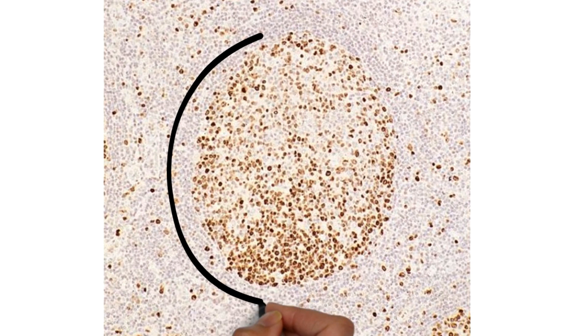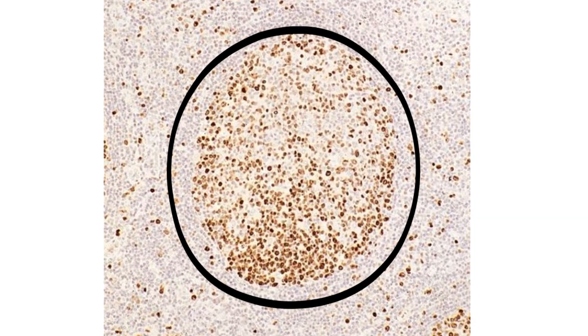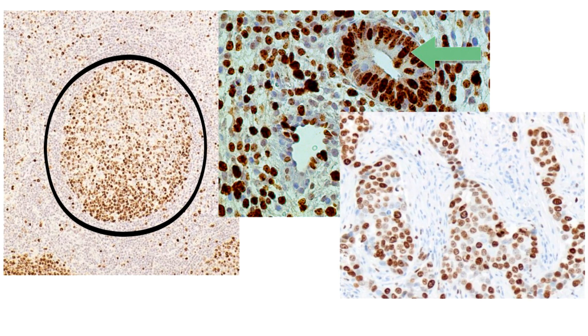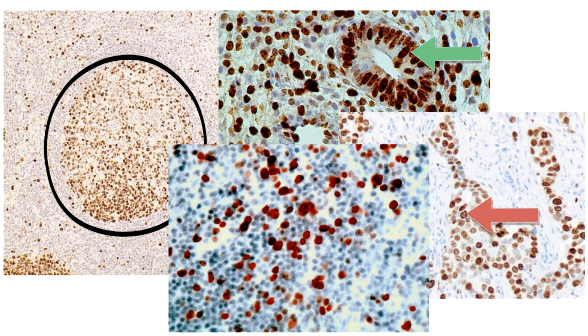Now let's have a look at some of the microphotographs of ki-67 expression. This beautiful image shows ki-67 positivity — here the ki-67 positive nuclei are reddish in color.